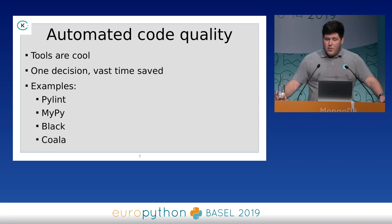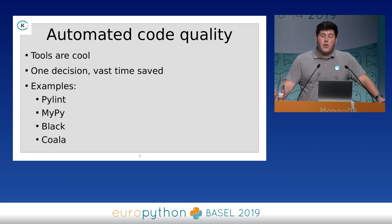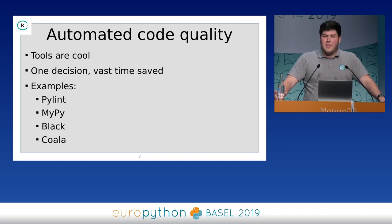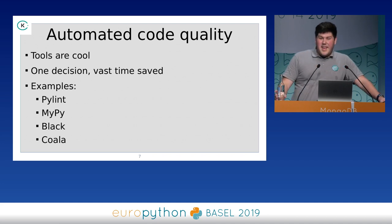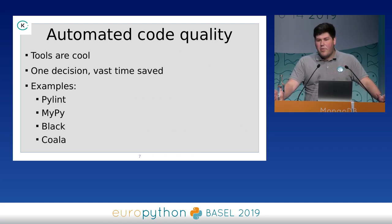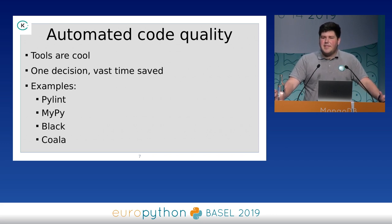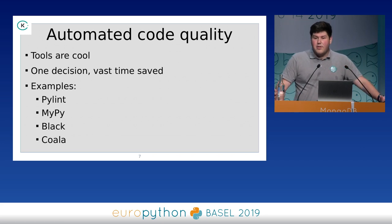We use a lot of automated tools to assure our code quality because tools are cool. You set up a script, you make a decision, and that decision saves you so much time. How many of you do code reviews at your companies? Almost everyone. Code reviews can be a pain, especially if things are not automated. Your colleagues may be nitpicky. You may argue about spaces or tabs, about indentation styles, about where to place that bracket — and things like this waste a lot of time.